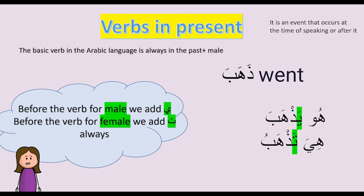Now let's move to the present tense. Before that, you should know we use the same verb form for both the future and the present, but in the future we add a word or letter before the verb to indicate future. The present tense verb — الفعل المضارع — is an event that occurs at the time of speaking or after it.